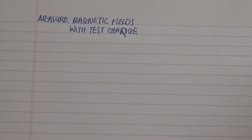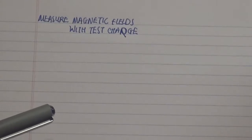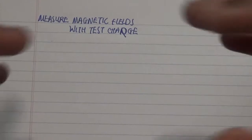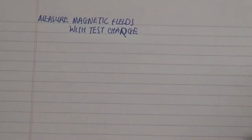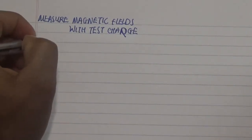Hello everyone, welcome to my channel! Today we're talking about how to measure a magnetic field with a test charge. If we have a particular space with a magnetic field — like placing two magnets where you see an interesting magnetic flux flowing — and then put in a test charge, either positive or negative, we can actually measure the magnetic field in that region with the help of the force.